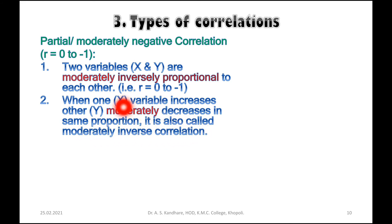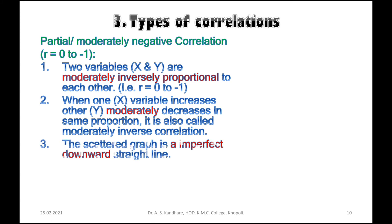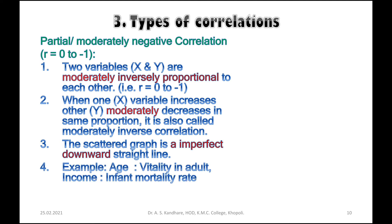The scatter graph for partial or moderately negative correlation is an imperfect downward straight line. An example is age and vitality in adults — as age increases, there is a decrease in vitality.